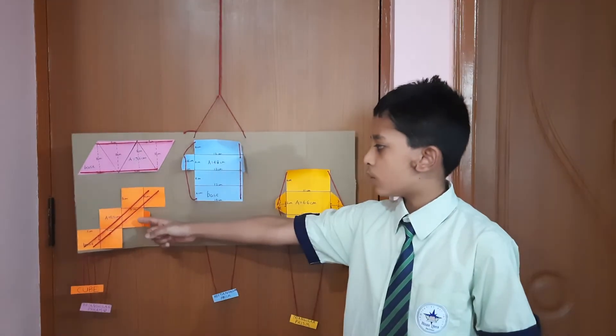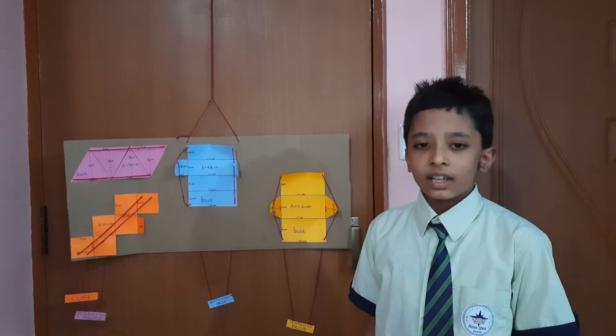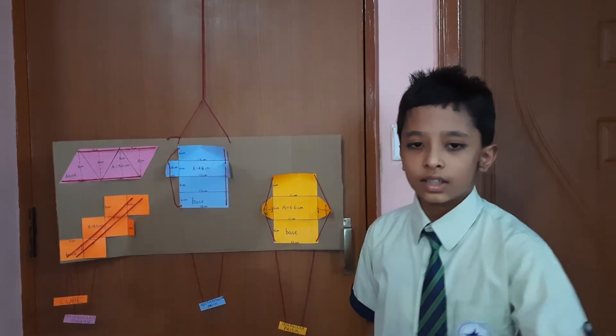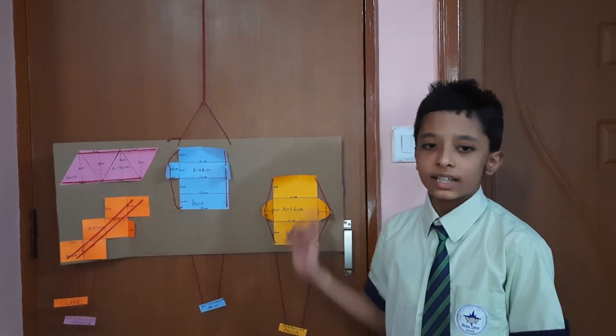A cube has 6 square faces. By adding the areas of all the faces, we will get the total surface area of a cube. Likewise, we can calculate for other 3D net shapes.